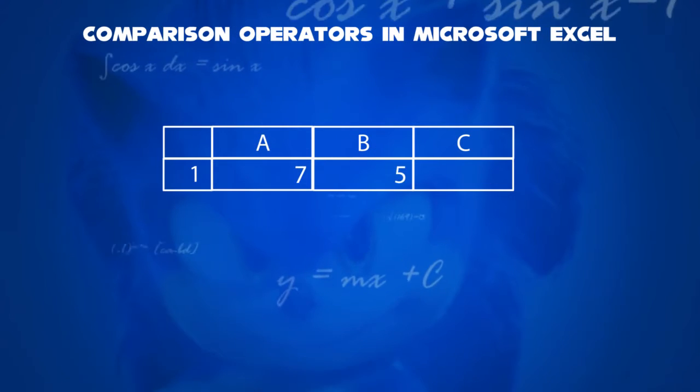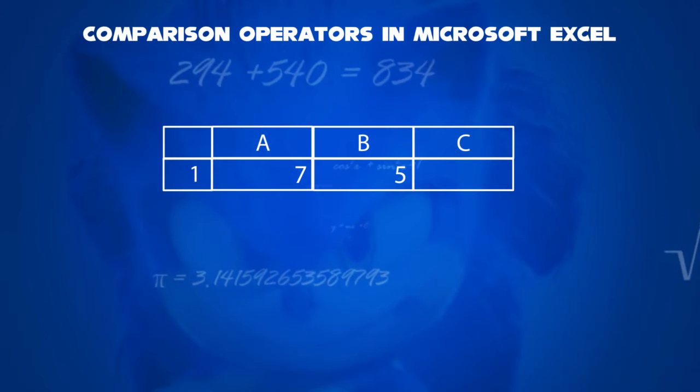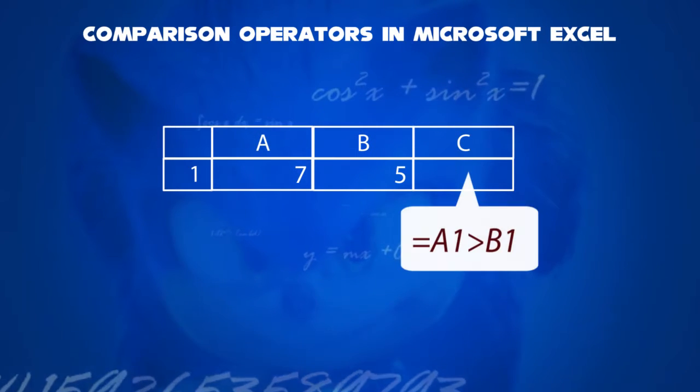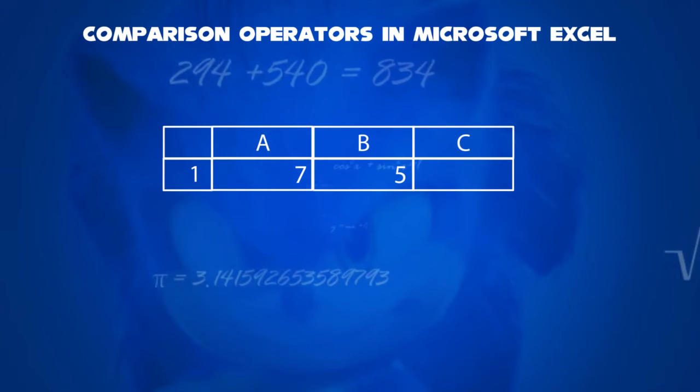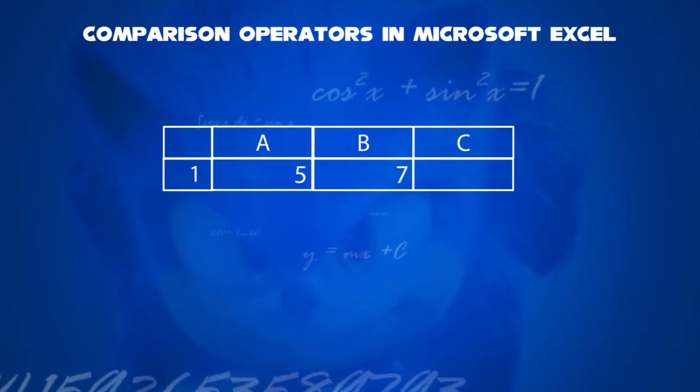Secondly, the greater than sign. Let's say 7 in cell A1 and 5 in cell B1. What you can write is A1 is greater than B1. This must show true. Thirdly, the less than sign.